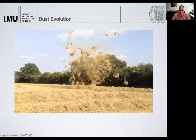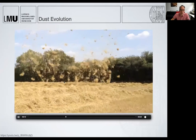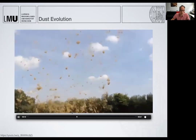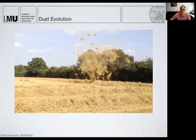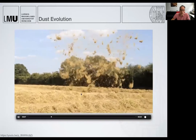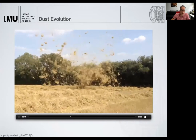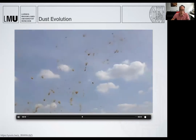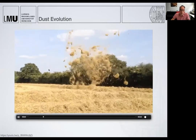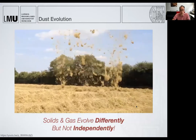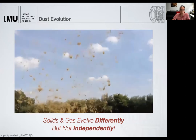Here you see dust evolution at play. You see how the dust grains in the disk are carried up by turbulence; they are also fragmenting by turbulence. Sometimes they collide from larger bodies and sediment down to the midplane. The first takeaway is that dust and gas are obviously coupled, but they're not doing exactly the same. There is gas everywhere, but not dust everywhere. So by seeing what the dust is doing, you get some information about what's going on just based on your intuition. But you shouldn't make a one-to-one translation between dust and gas. What it really boils down to is that solids and gas evolve differently, but not independently.